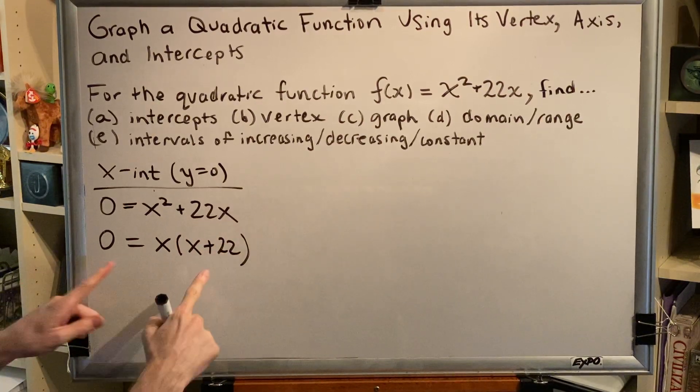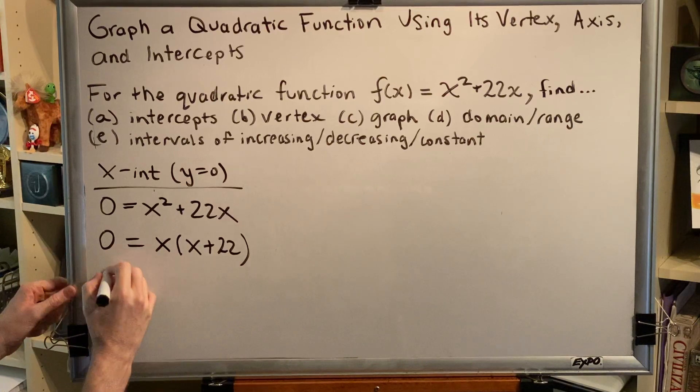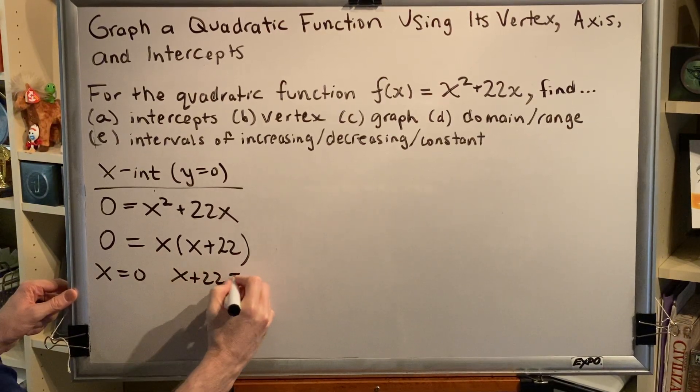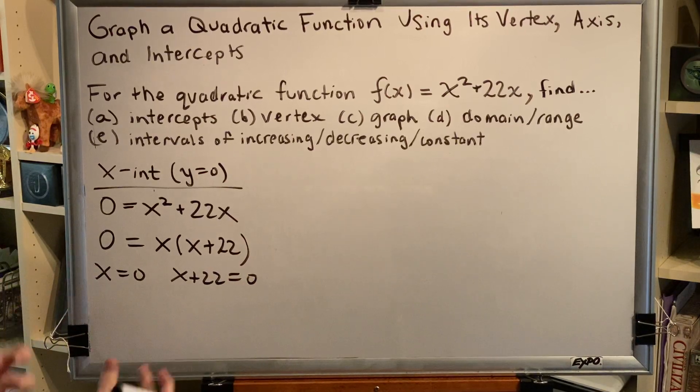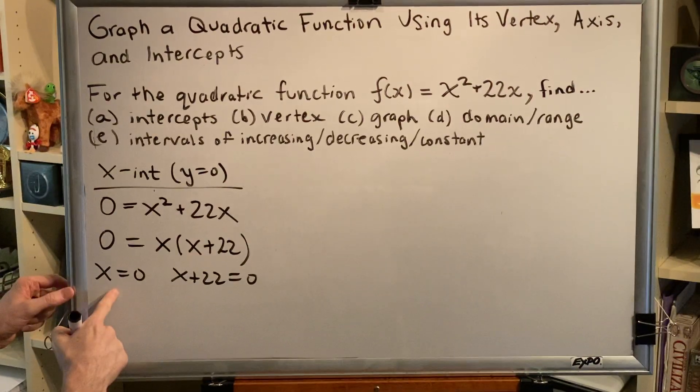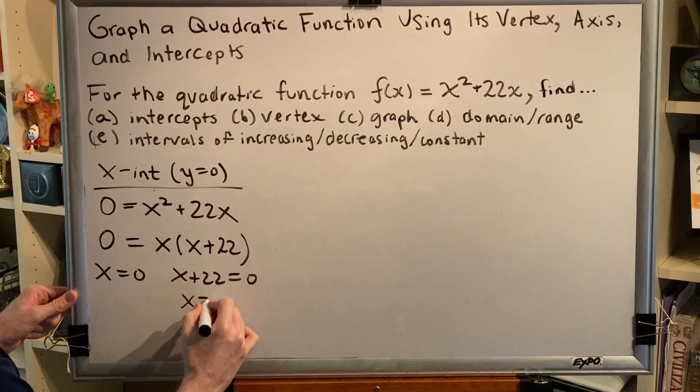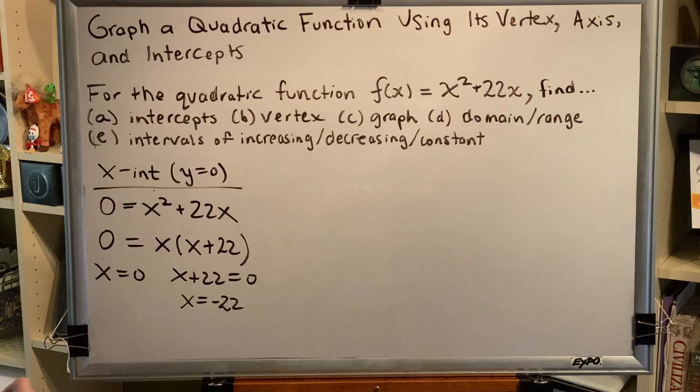By the zero product property, when two things multiply to make zero, then either the first thing is zero, or the second thing is zero, or both. So we set them both equal to zero. This gives me my first solution, x = 0. And if we move the plus 22 to the other side and make it negative, we get the second solution.